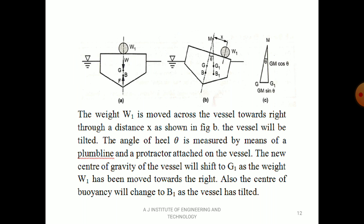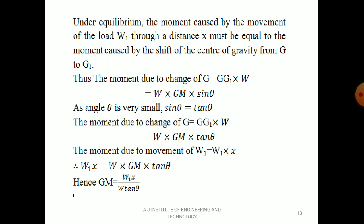GG1 can be obtained using diagram C by applying the sin theta concept: sin θ = GG1 / GM, so GG1 = GM × sin θ. For small angle theta, sin θ ≈ tan θ. The moment due to change of G equals GG1 × W = W × GM × tan θ. Under equilibrium: W1 × X = W × GM × tan θ. Hence GM = (W1 × X) / (W × tan θ). This is the experimental method of determination of metacentric height.